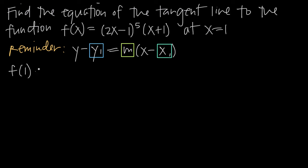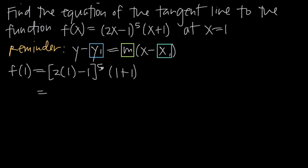We say f of 1, and plugging in x equals 1 we get 2 times 1 minus 1 raised to the fifth power times 1 plus 1. So 2 times 1 is 2, minus 1 is 1, and 1 to the fifth power is 1. Then 1 plus 1 is 2, so we have 1 times 2, which is 2. This means we're interested in the point (1, 2), so x sub 1 is 1 and y sub 1 is 2.